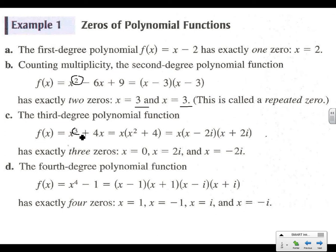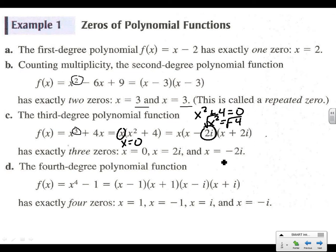How about x cubed? We need 3 zeros here. If we factor out an x, we get x and then x² minus 4. We know that from this one x equals 0. From the parentheses, x² + 4 = 0 gives us x² = −4. When we take the square root of that, we get plus or minus the square root of negative 4, or plus or minus 2i — the square root of 4 is 2, and we have an i.